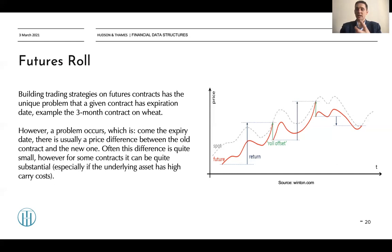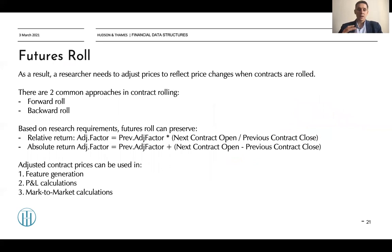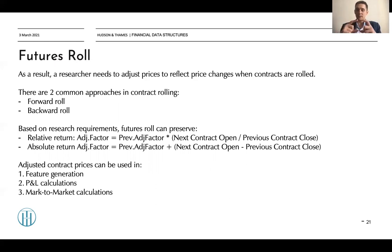How do we take into account this offset — sometimes called carry cost or futures draw? We need to offset these differences to make a so-called continuous contract. There are two common approaches: forward roll and backward roll. Based on research requirements, we decide what kind of returns to preserve. If we want to preserve relative returns — the relative difference between the first and next contract — we use a relatively adjusted continuous contract. If we want to preserve absolute returns — the price difference between two contracts — we use absolute returns.